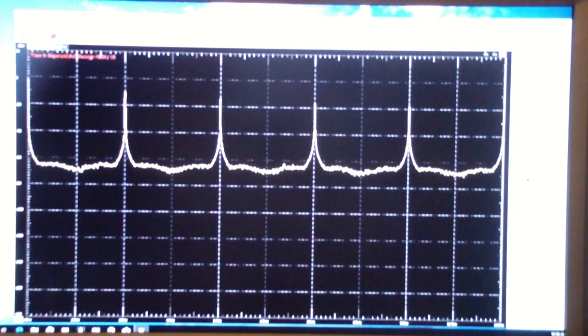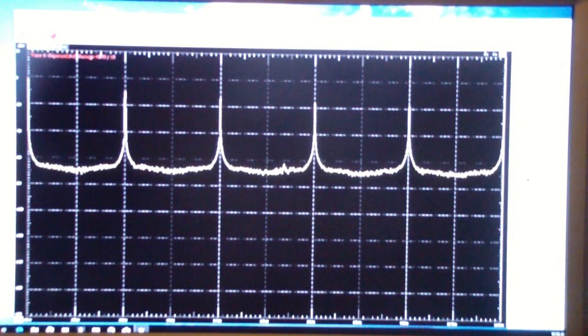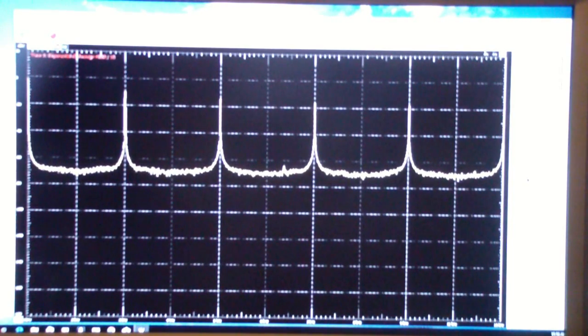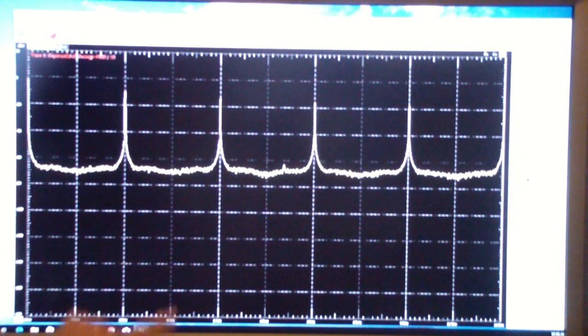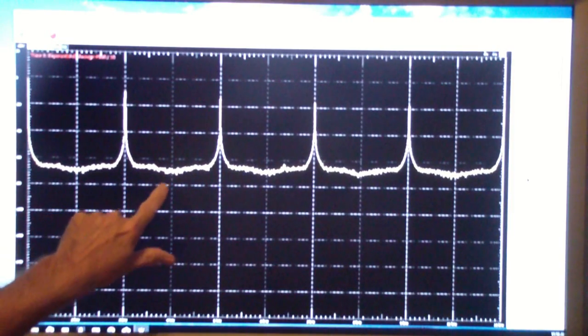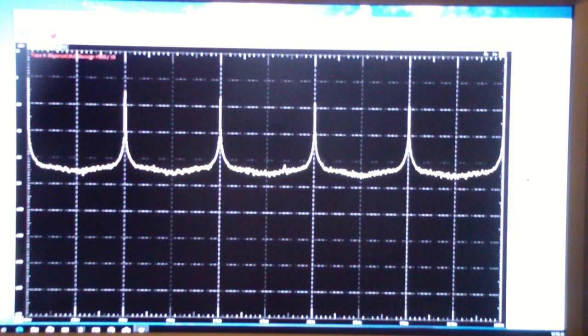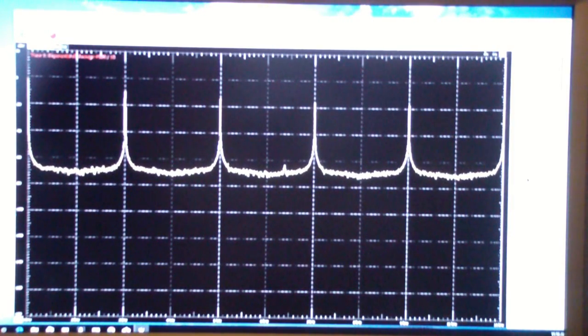What you see on the screen is the spectrum analyzer displaying the first five harmonics of a one kilohertz square wave. I'm getting such good noise levels because I'm using an average of 10.